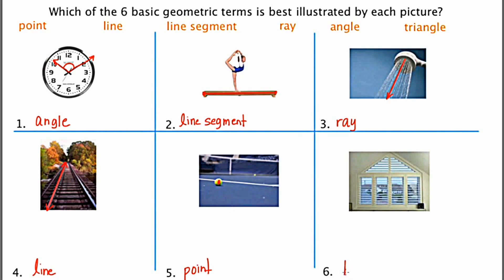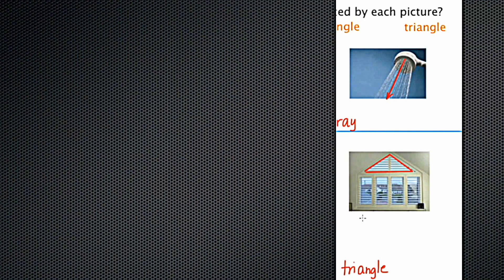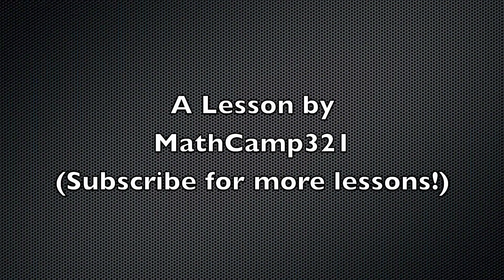And then number six would be triangle. The upper portion of this window forms a nice triangle. So here are six examples of where these basic geometric terms occur in everyday life.